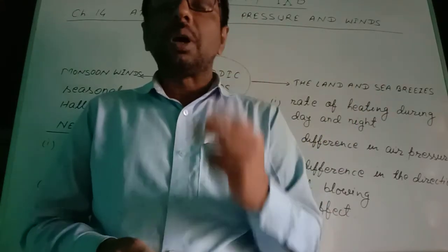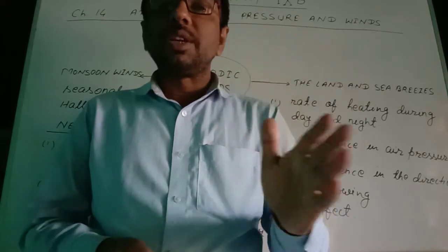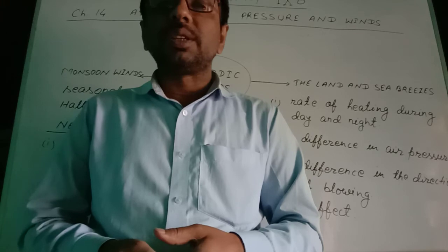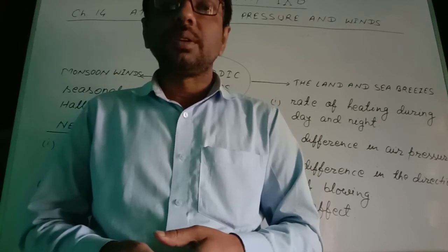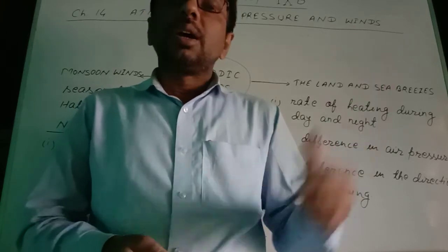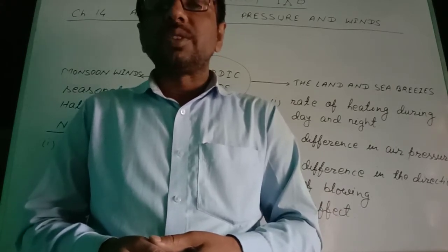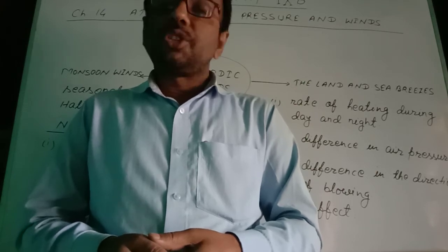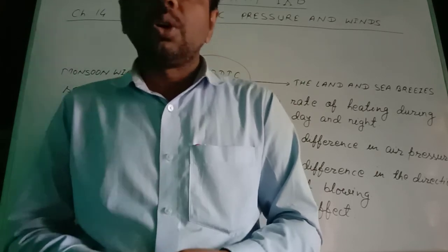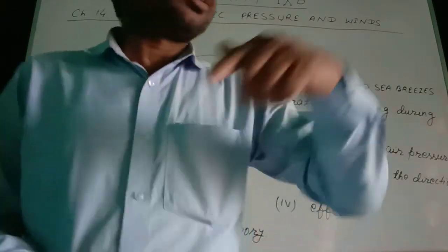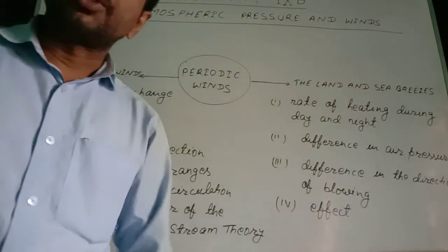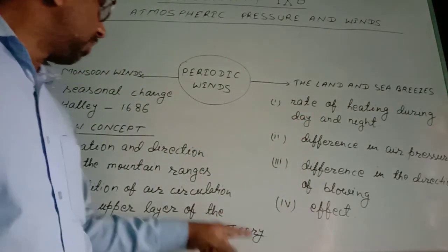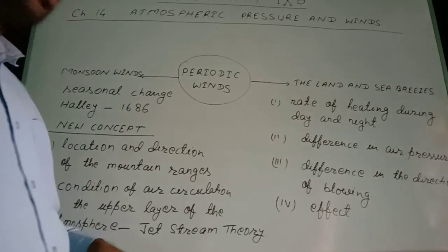So due to seasonal change and periodic change, winds change their directions. In seasonal change, you saw the change in direction during summer and winter seasons. In periodic change, you saw land breezes and sea breezes during daytime and at night. Winds that change their direction in this way are called periodic winds. Now in the next step we are going to discuss the jet stream theory of winter monsoon winds.